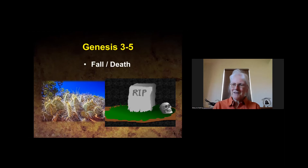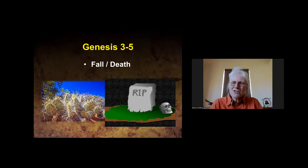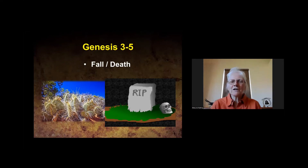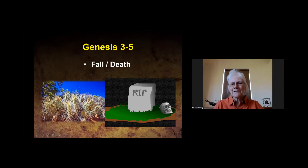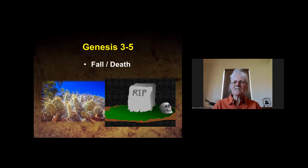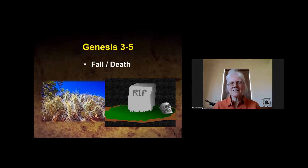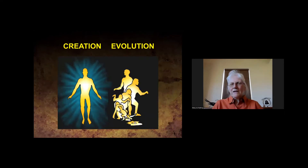If there's a good God, how could he allow death, disease, and suffering? We find the beginning of that answer in Genesis chapter 3. God told Adam and Eve there would be thorns and thistles — the earth, which used to be very productive and easy to work, became very difficult. I believe the scientific evidence fits with what we see in Genesis 3 to 5. I encourage you to sit down and read Genesis 1 through 11 in one reading.